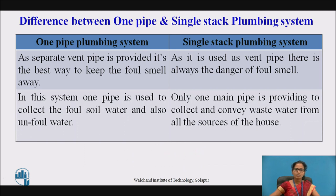Now let us see the difference between the one pipe and the single stack plumbing system. In the one pipe system, a separate vent pipe is provided, which is the best way to keep foul smell away. Whereas in the single stack system, there is always a danger of foul smell as no separate vent pipe is provided. In the one pipe system, one pipe is used to collect both foul soil water and non-foul water, whereas in the single stack system, only one main pipe collects and conveys waste water from all sources.